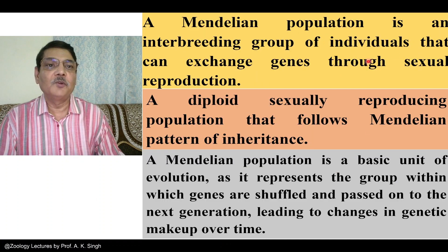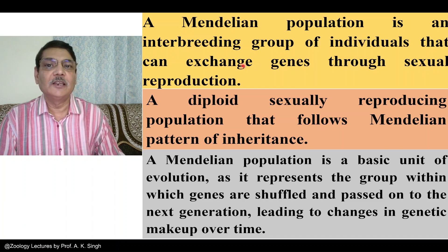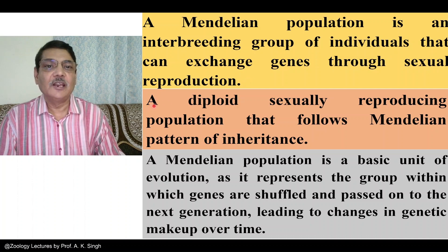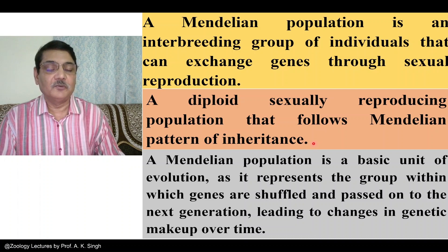A Mendelian population is an interbreeding group of individuals that can exchange genes through sexual reproduction. It can also be defined as a deployed, sexually reproducing population that follows the Mendelian pattern of inheritance — such as segregation or independent assortment of genes.